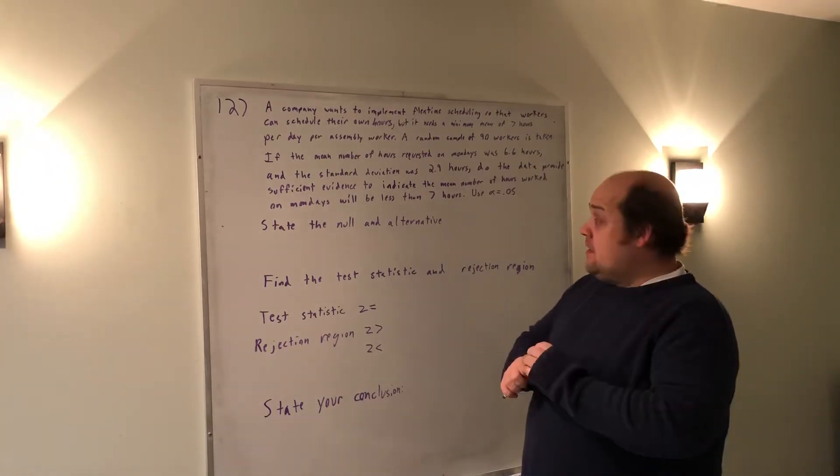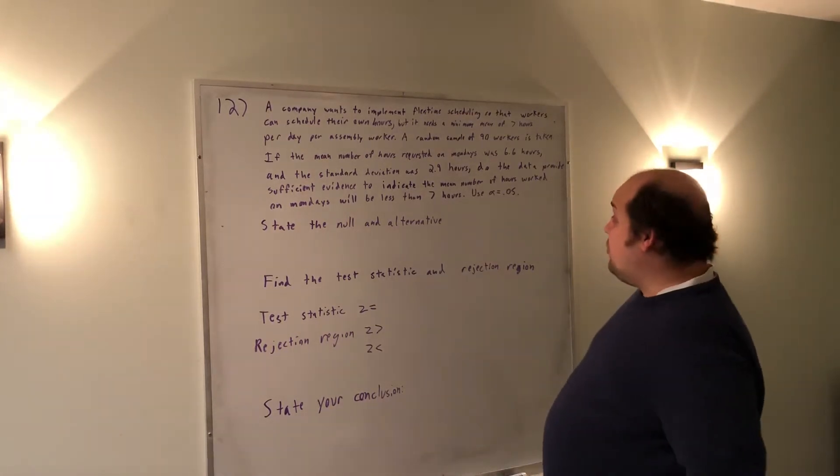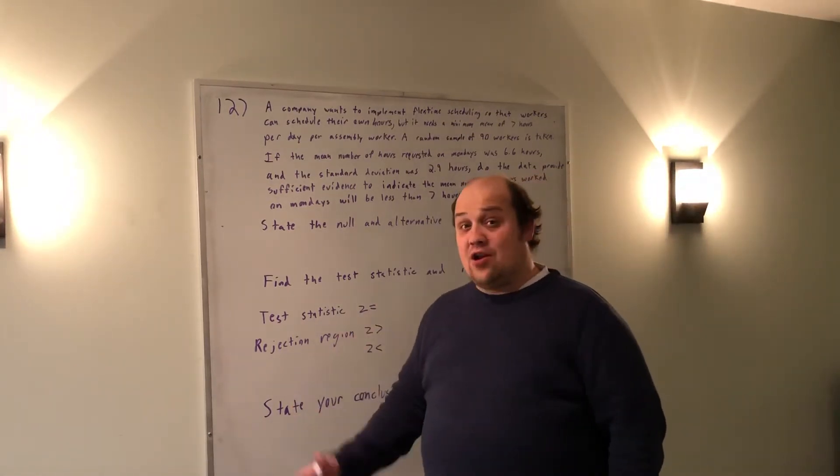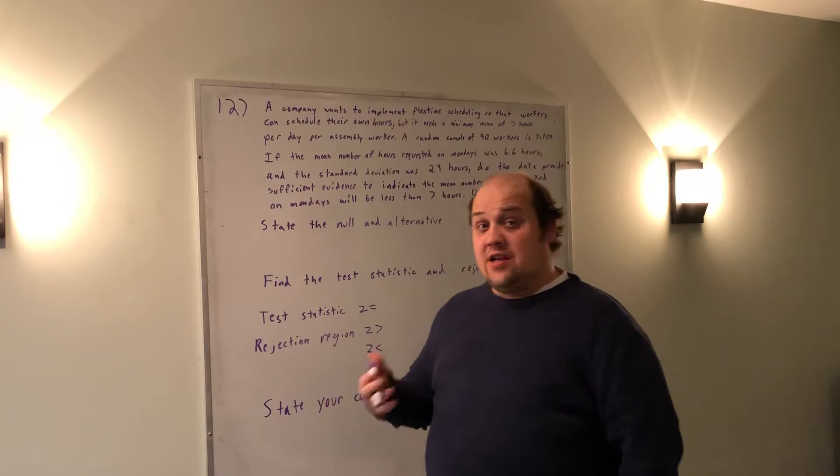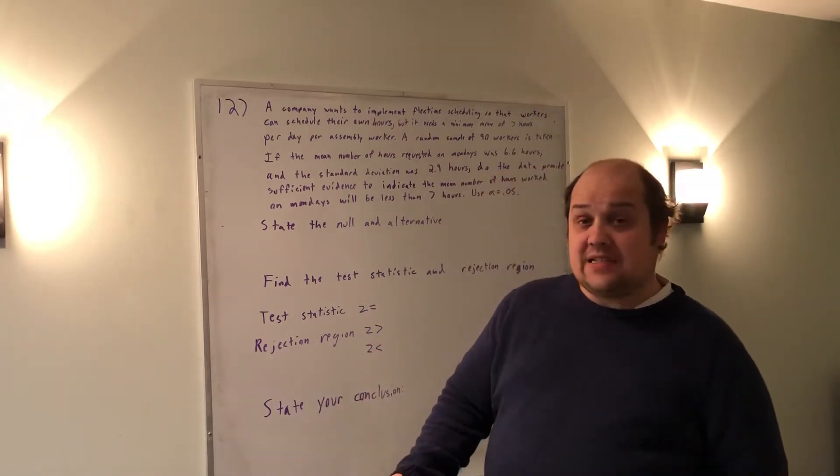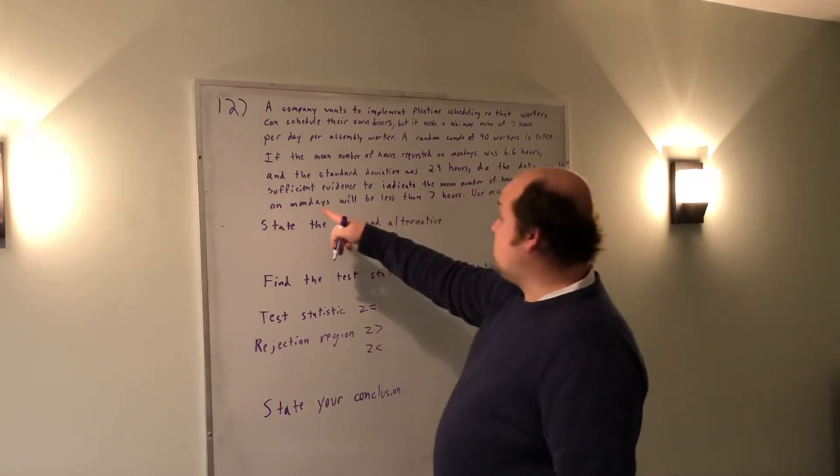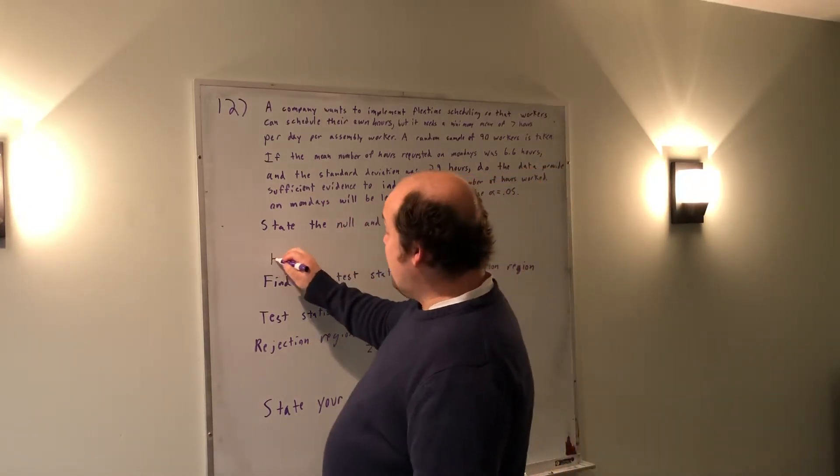First we need to state the null and alternative. What they're trying to prove is we can't let our workers just schedule as they wish because nobody's going to come in on Mondays. So they want to show sufficient evidence the mean number of hours worked is less than seven.